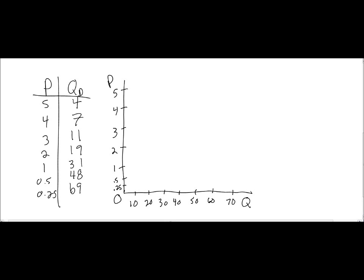The next thing I want to do is actually plot the points on my demand schedule on this price and quantity axis. I'll start at the high prices. At $5, only four candy bars are demanded, so I will put a point here. At $4, seven candy bars are demanded. At $3, eleven candy bars. At $2, 19 candy bars are demanded. At $1, 31 candy bars are demanded. At $0.50, 48 candy bars are demanded. And at $0.25, 69 candy bars are demanded. I've plotted all of the points for my demand schedule.